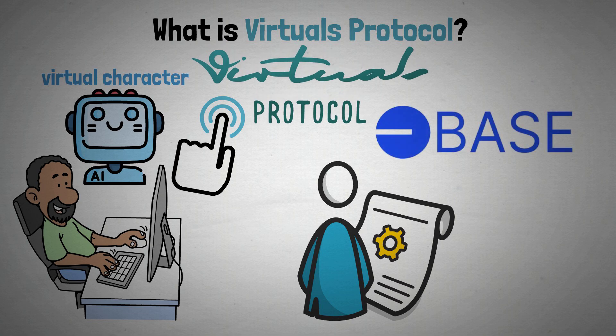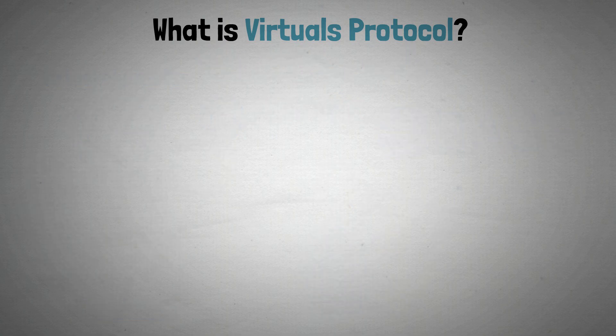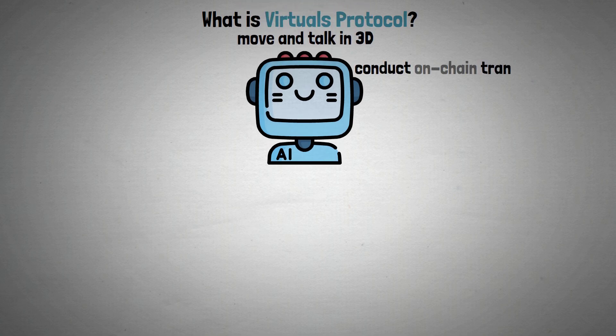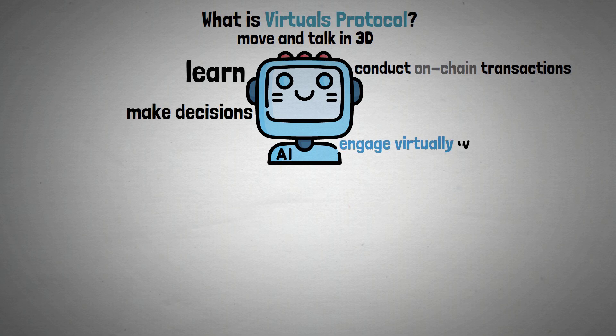With the help of the protocol, AI agents are able to move and talk in three dimensions, conduct on-chain transactions, learn, make decisions, and engage virtually with their surroundings.